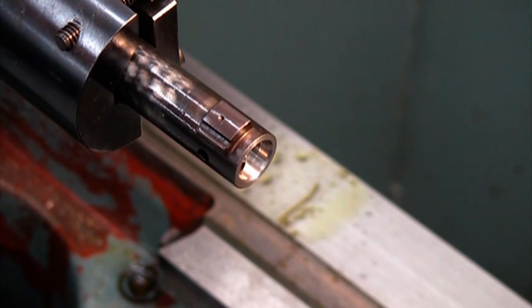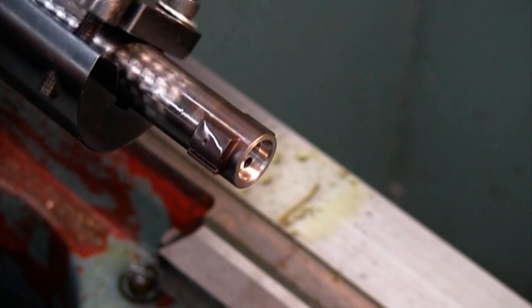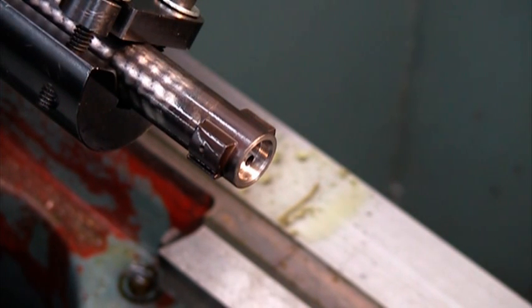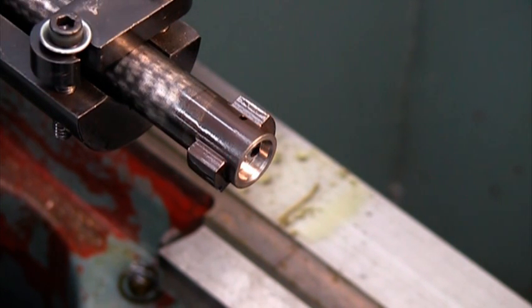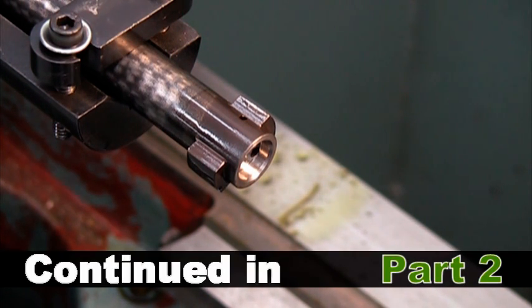The machining part is all done on the lathe. We've bored this out for a standard bolt face diameter and put a nice little 45-degree chamfer on it. It's cleaned up and gives it a very nice clean look rather than just taking out the old extractor and putting a new Sako in. I'll take this out and get it all set up in the mill to cut the slot for the extractor.